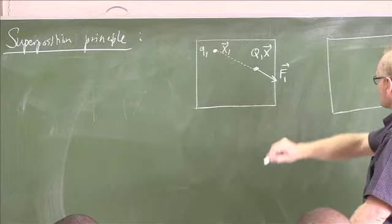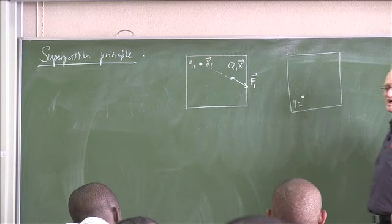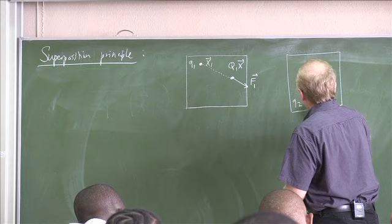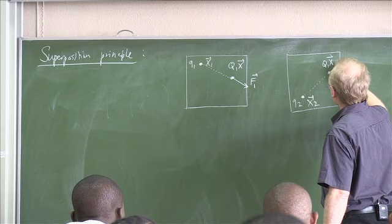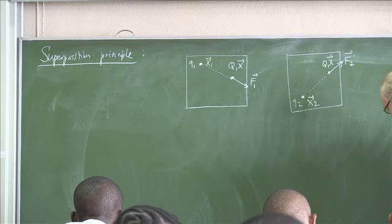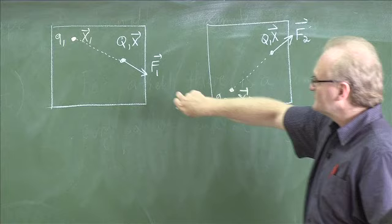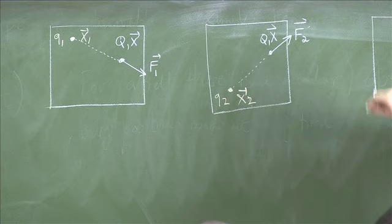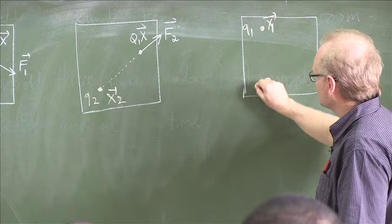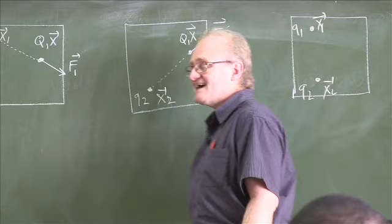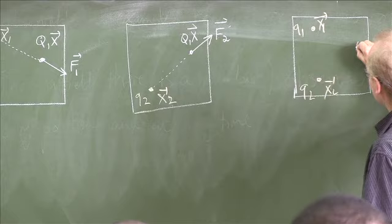We can then consider a second situation in which we have a charge here, q2, with a position x2. There is charge q in position x. And this will feel a force, f2. So we make a measurement of f2, we make a measurement of f1. And then we consider a third situation in which we have a charge q1 at position x1, a charge q2 at position x2. So now I have got the charge from this situation and the charge from that situation.